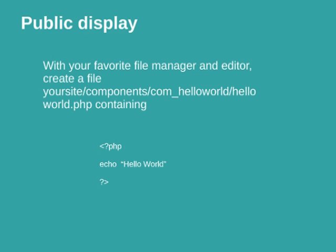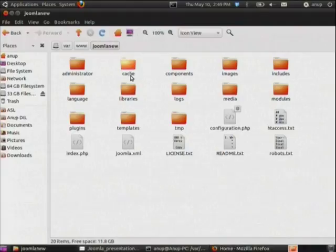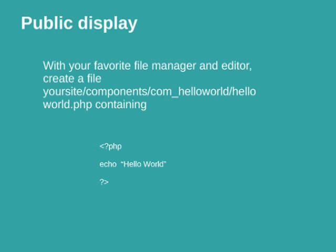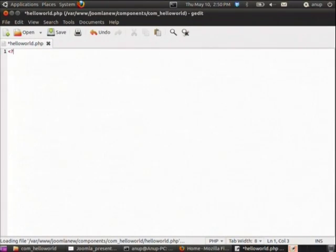Joomla has two entry points: one is public and one is administration. Public access only allows viewing, while administration access allows doing anything. We have to create two important files — for the public display we are going to create a HelloWorld.php file and just print 'Hello World'.